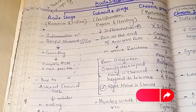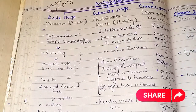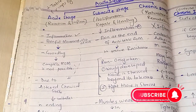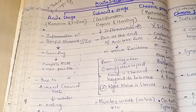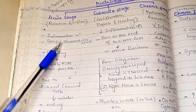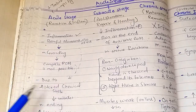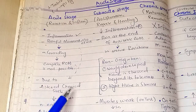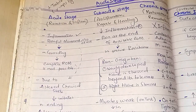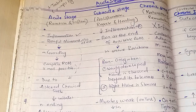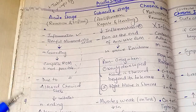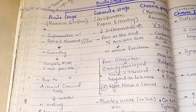In the acute stage, there is inflammation as well as pain, and pain is present even at rest. This results in muscle guarding, and because of the muscle guarding, completion of the range of motion is not possible. Both pain and impaired movement are due to an altered chemical state, which irritates nerve endings causing pain and increasing tissue tension due to effusion and edema. This stage lasts four to six days unless the insult is perpetuated.